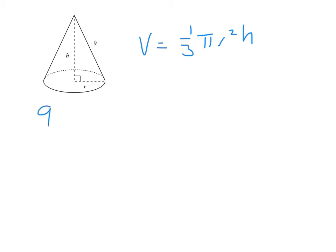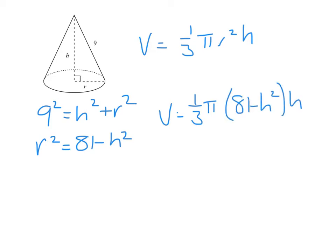Square the hypotenuse equals the sum of the squares of the other two sides, so r squared would be 81 minus h squared. That tells me that the volume is 1 third of pi r squared h.